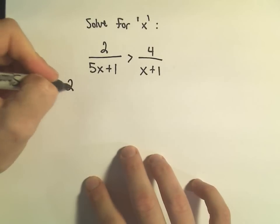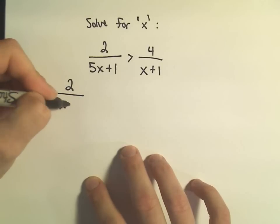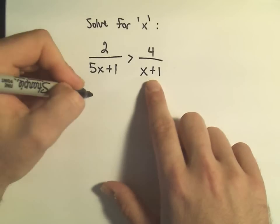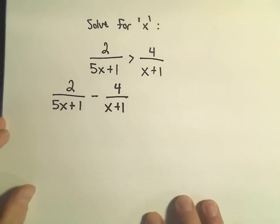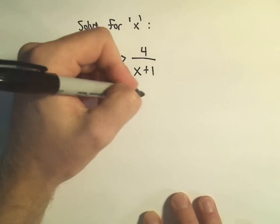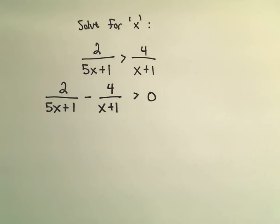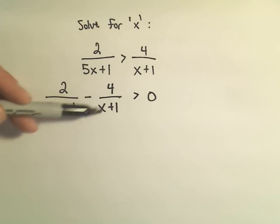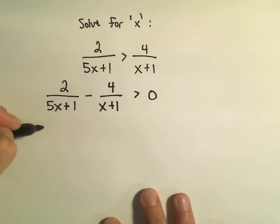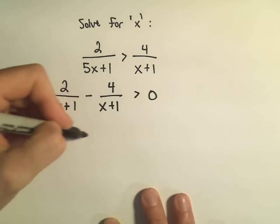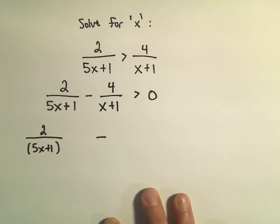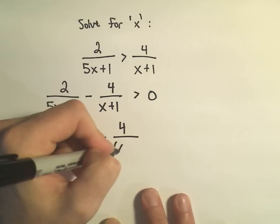The first thing I do is make one side 0. I'm going to do that by subtracting the 4 over x plus 1 from both sides, and that's still greater than 0. At this point I want to write the left side as a single fraction. So I've got 2 over 5x plus 1 minus 4 over x plus 1.